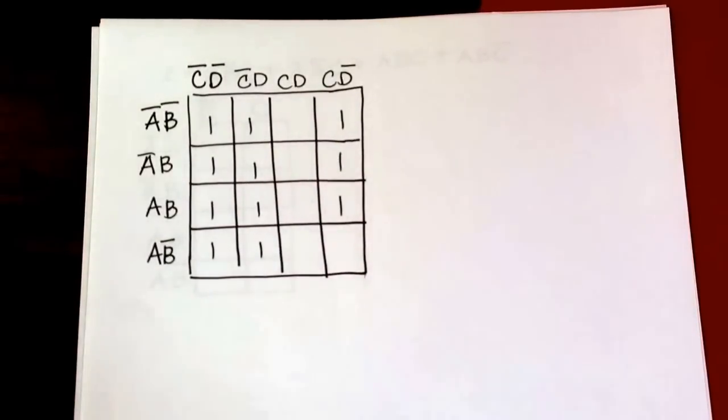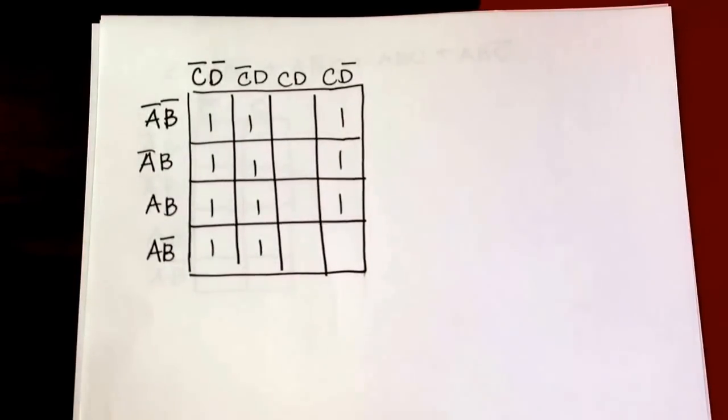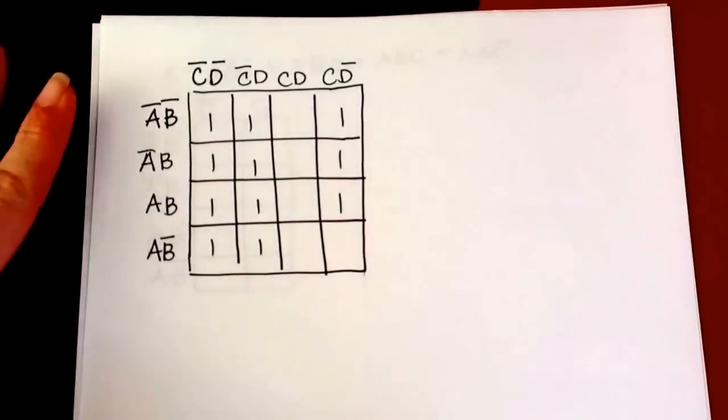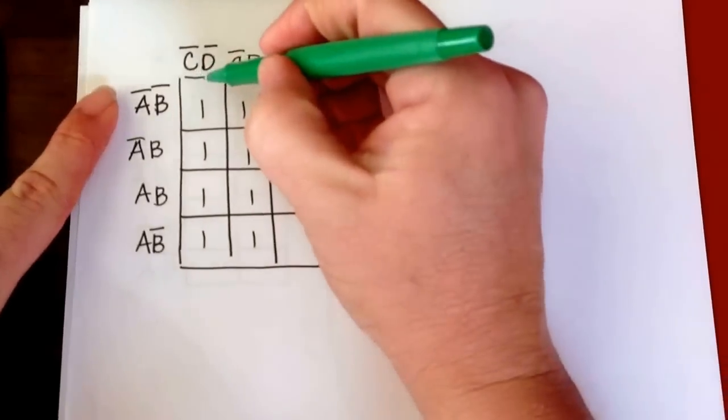This is another example on K-mapping with four variables. I want to start by looking for the largest possible group, and it looks like it's a group of eight here.